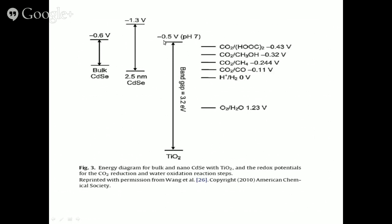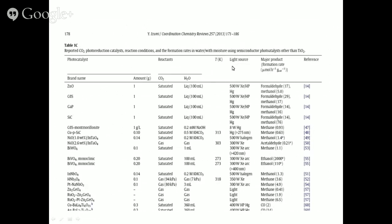In terms of the band diagram, I have shown the redox potentials for the various products we are considering: formic acid, methane, and carbon monoxide. With respect to the conduction band minimum, these redox potentials are in a favorable position. So if CO2 is activated, the subsequent reduction to formic acid, formaldehyde, methanol, methane, and carbon monoxide are all thermodynamically possible processes.